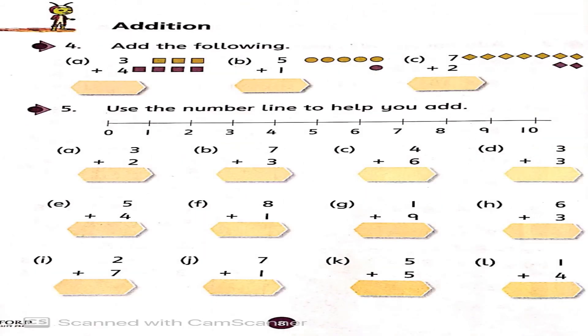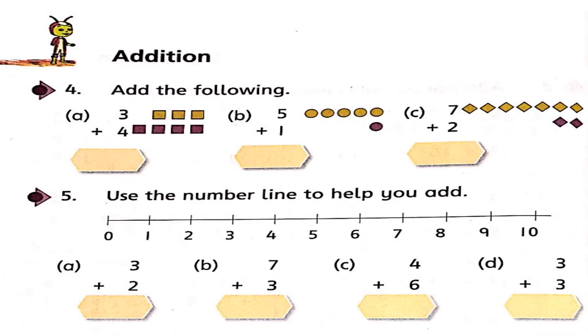Now, open book page number 8. Write date and day. This is page number 8, question number 4, part A: 3 plus 4. You can see there are 3 different shapes. In part A, rectangle shapes are there. 4 purple rectangles are there and 3 yellow rectangles are there. How many total rectangles are there? 4 plus 3 makes 7.